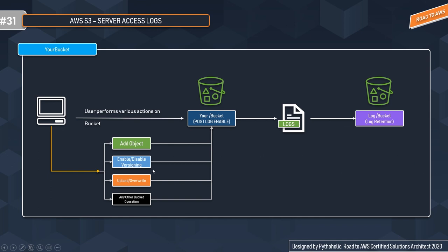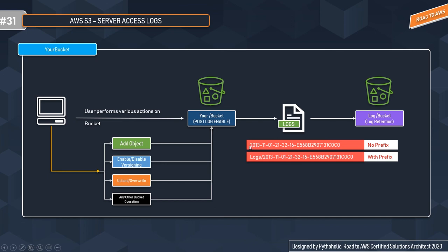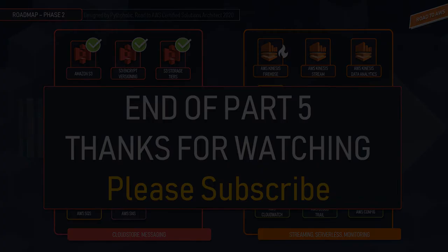To reiterate: the user performs operations on the bucket — add object, enable/disable versioning, upload, overwrite, or any other bucket operation — and these operations generate logs that are stored in the target bucket based on the target bucket policy set in the source bucket. Regarding prefixes: with no prefix, you get a general timestamp as the log name. With a prefix such as 'logs', you will get 'logs/' followed by the timestamp.